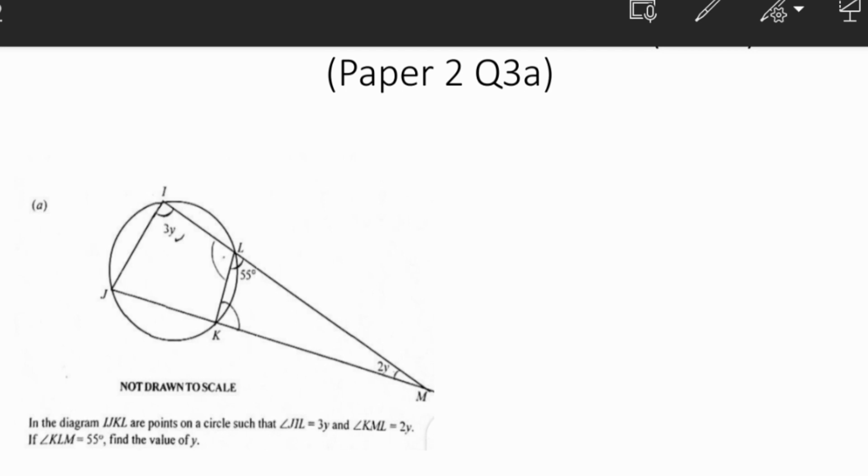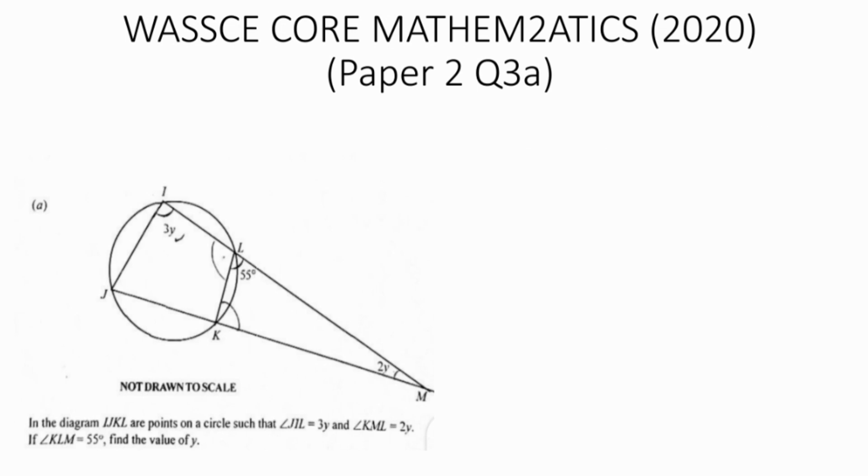Also, angle JKL and angle LKM are on a straight line, so they are supplementary. So they also sum up to 180 degrees. So we can state that angle LKM plus angle JKL, which is equal to 180 degrees minus 3Y, equals 180 degrees.